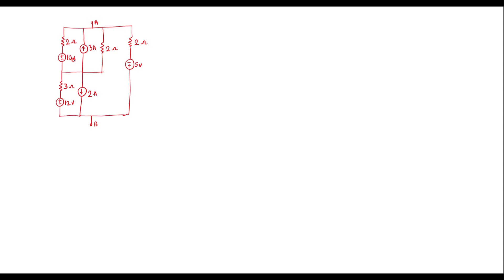Here, 10 volt voltage source is in series with 2 ohm resistor. If a voltage source is in series with a resistor, we can transform the voltage source into a current source. That is, I is equal to V by R. Here V is 10 and the resistor value is 2, so I equals 5 amp. I can replace this voltage source by a 5 amp current source, and this 2 ohm is connected in parallel with the current source.